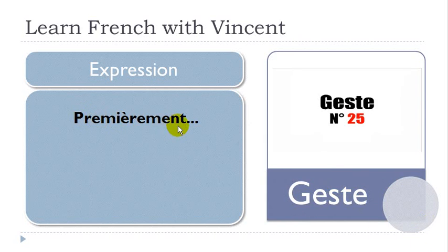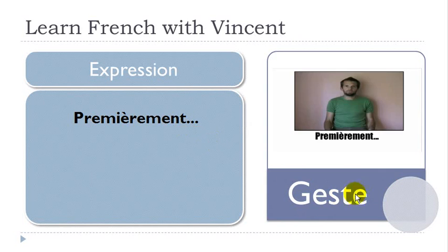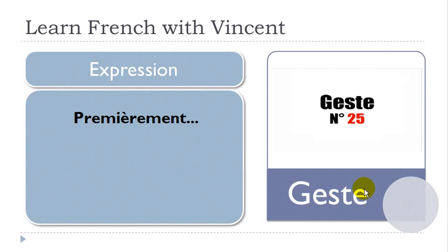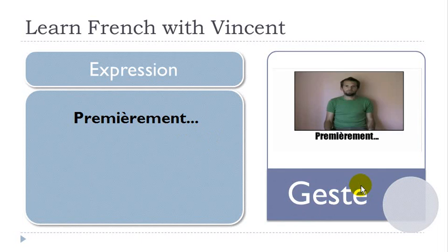'Premièrement' can be translated as 'first.' You would like to introduce probably several things and start with the first one — premièrement. Of course it's the hand, and then it's the first one.